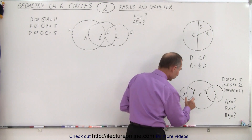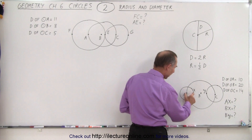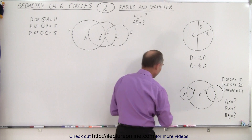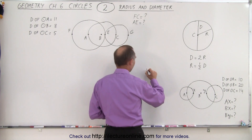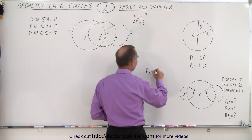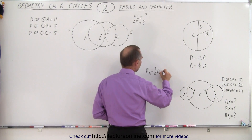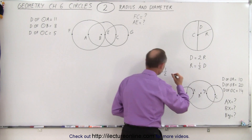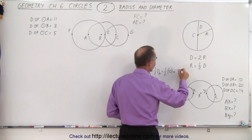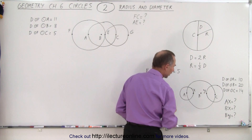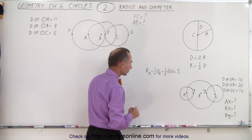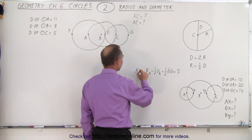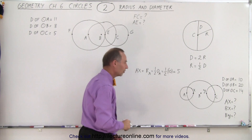The first thing we want to do is find the distance from A to X. That's this distance right here, which looks like it's the radius of circle A. So the radius of circle A equals one-half times the diameter of circle A, which is one-half times 10, which equals 5. So the distance from A to X equals the radius of A, which is 5.